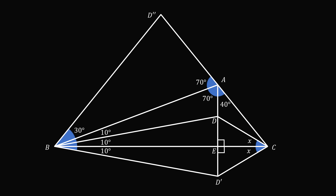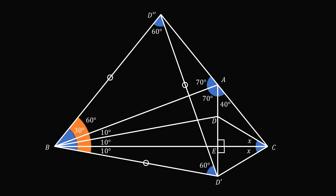We also have the side BD'' congruent to the side BD'. Now let's construct a line segment between D' and D''. We have an isosceles triangle. The vertex angle D'BD'' is equal to 30 plus 10 plus 10 plus 10, which equals 60 degrees. So this entire angle is equal to 60 degrees. We have an isosceles triangle with a vertex angle of 60 degrees, and therefore we must have an equilateral triangle. The other two angles must each be equal to 60 degrees, so the final side of the triangle is equal to the other two sides. Now we are also going to show that D'D'' is equal to D'C.